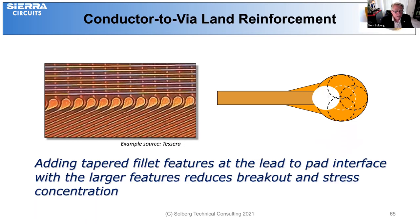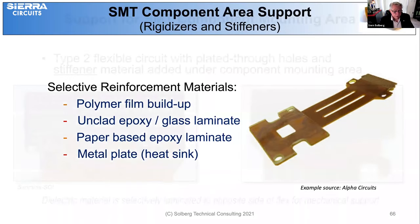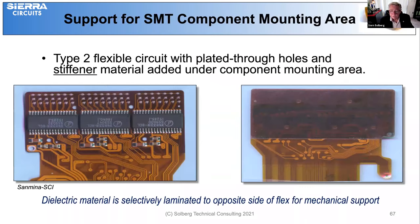Getting into reinforcement: typical reinforcement in areas where you're mounting components could use polyamide film for buildup, unclad epoxy glass laminate, paper-based epoxy laminate, or even a metal heat sink. Here's a Type 2 product showing components mounted on one side and on the opposite side the area has been reinforced with an additional layer of polyamide film, which adds a little more stiffness to take the stress off of the solder joints.